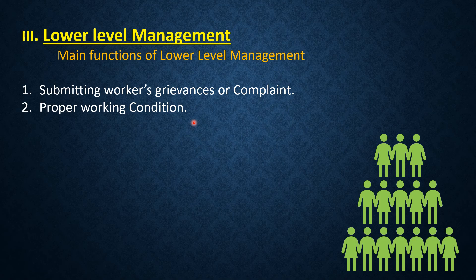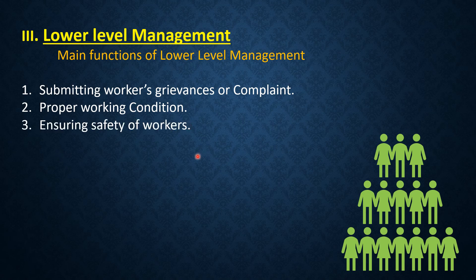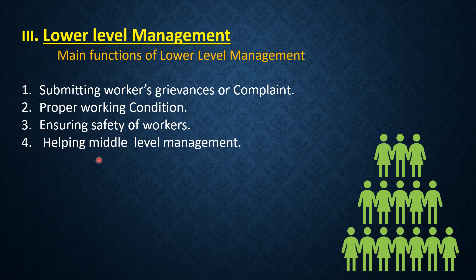Supervisory managers maintain good working conditions and develop healthy relations between superiors and subordinates, creating a supportive work environment which improves relations between supervisors and subordinates. Third point is ensuring safety of workers — the chances of accidents can be eliminated by building protective guards around machines. Supervisory level managers provide safe and secure working conditions for workers. Fourth point is helping middle level management — they assist middle level managers in recruiting, training, and promoting employees.